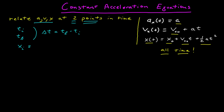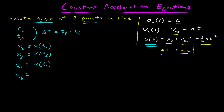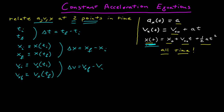The initial position is the position function evaluated at the initial time. The final position, which is x subscript f, is defined to be the position function evaluated at the final time. My initial velocity is the velocity function evaluated at the initial time. And the final velocity — this is on the x axis, so I'll give it a subscript x — is the velocity function evaluated at the final time. We can also calculate the position difference, which is the final position minus the initial position, and the velocity difference, which is the final velocity minus the initial velocity.